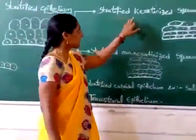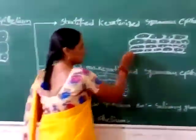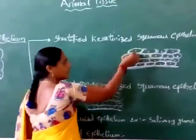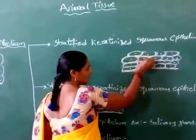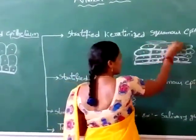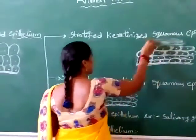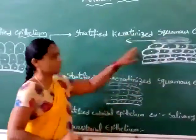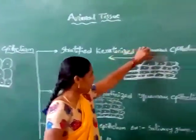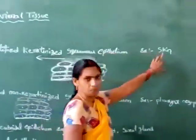First, stratified keratinized squamous epithelium. It is multilayers, and cells are flat-like structures. Keratin is deposited at the upper layer of the cells. That is why it is called stratified keratinized squamous epithelium. For example, skin.